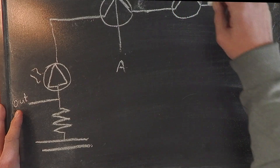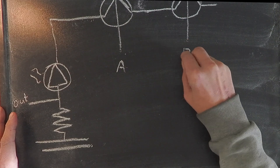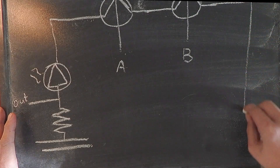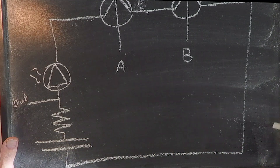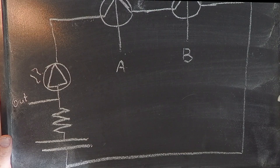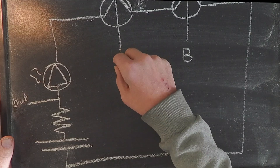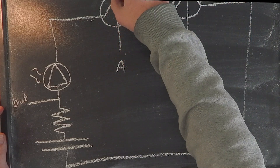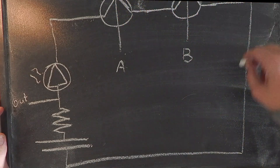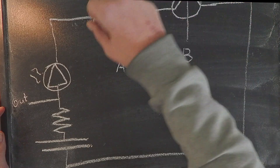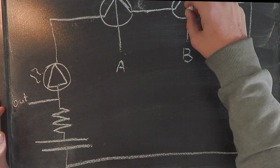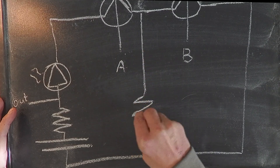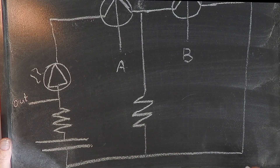Now we come to the second transistor, and we connect these two in series. Then we go down to the battery. We need to add one thing: if we push electricity through the first transistor, we want it to activate, but the electricity must flow through in a way that A cannot activate unless B is already activated.